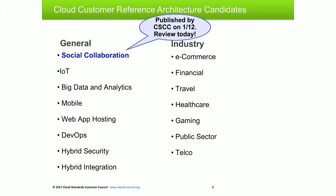These are all of the candidate architectures showing the latest one here: social collaboration. The ones we've already published include IoT, analytics, mobile, web application hosting, and e-commerce as the first of the industry architectures. We have security, public hybrid integration currently under development. We look forward to working on additional industry architectures — if you have an interesting topic that you think would be useful, please contact us or contact Tracy and let's work together to develop the next one in the series.